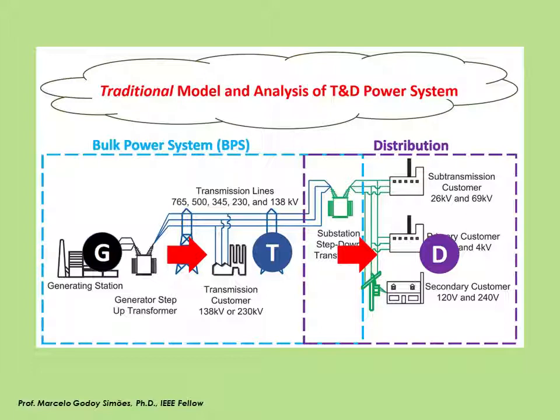A power system can be understood from this figure. On the left side there is an electrical generator — it can be either a synchronous or an induction machine. The machine voltage is raised with a transformer; such high voltage is compatible with transmission lines to allow electrical power to travel long distances. The transmission, sub-transmission, and distribution voltage levels depend on utility standards or regulations, with the main goal being to decrease copper losses.